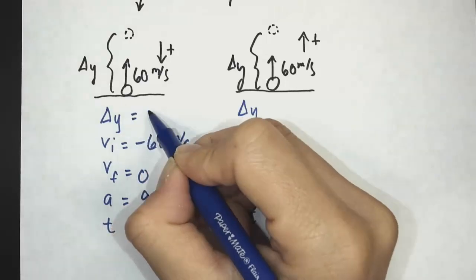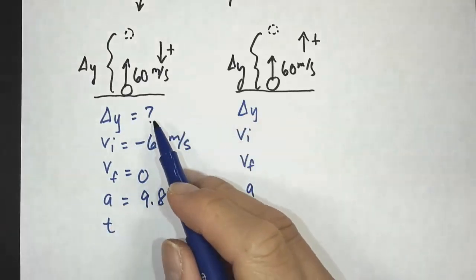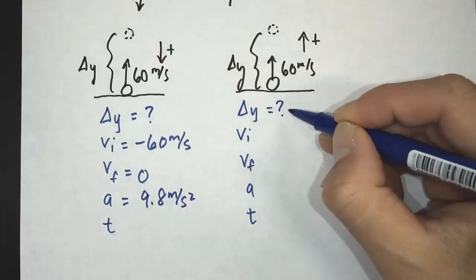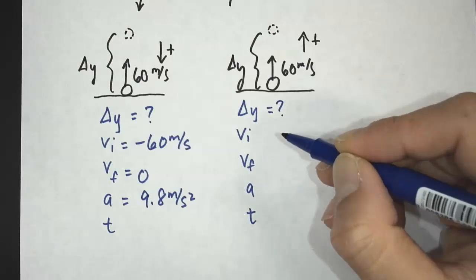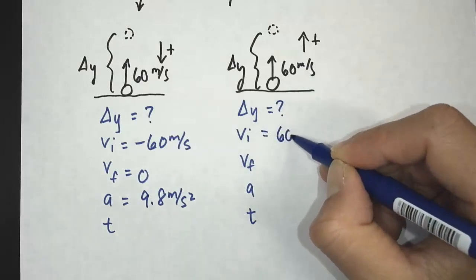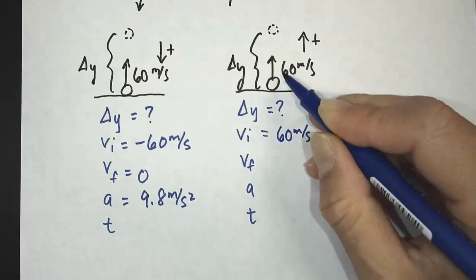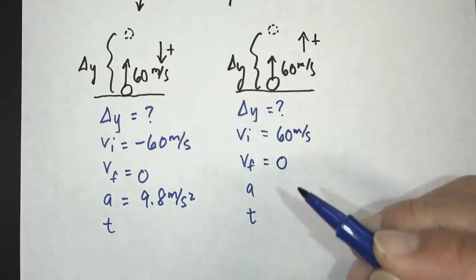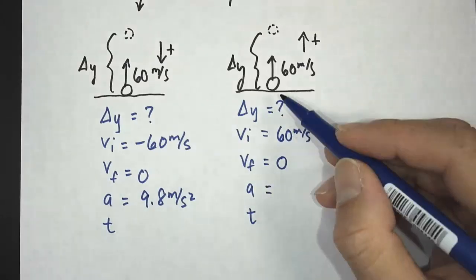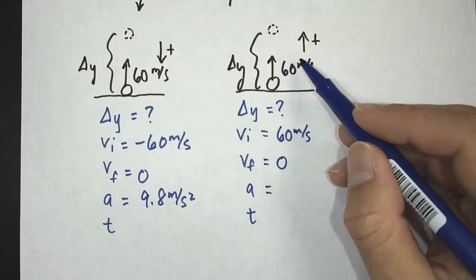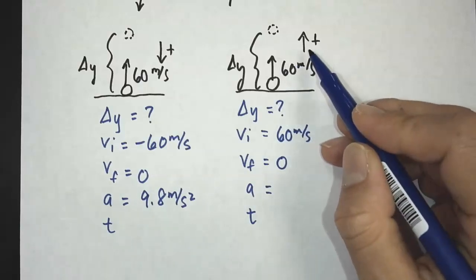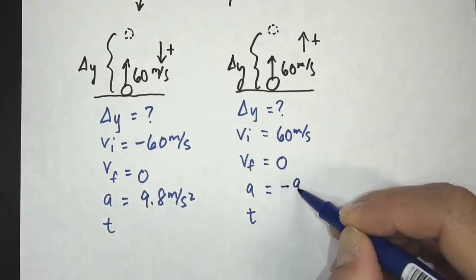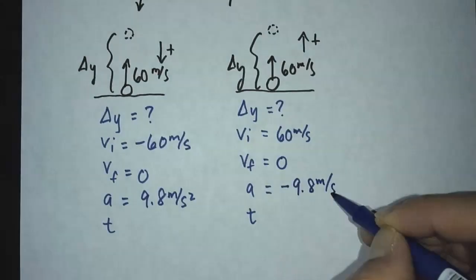I'm looking for the maximum height the ball reaches. For the up-positive case, the initial velocity is positive 60 meters per second since it's moving in the positive direction. The peak height has a velocity of zero. The acceleration due to gravity is downward, and since I defined up as positive, the acceleration will be negative 9.8 meters per second squared.